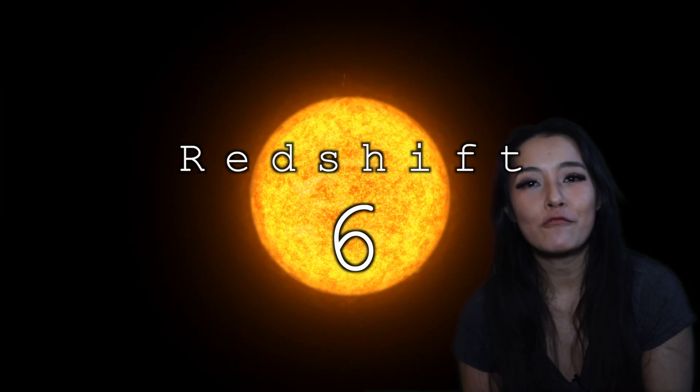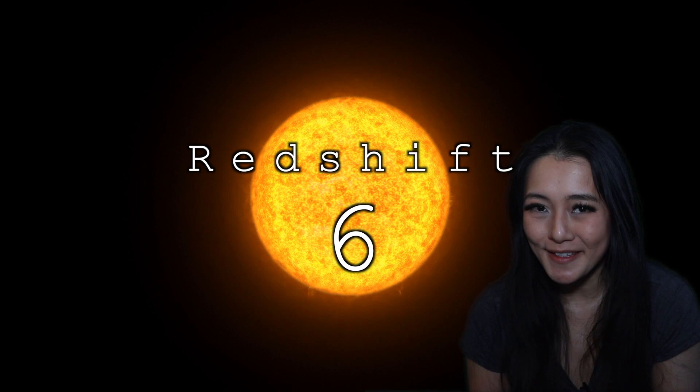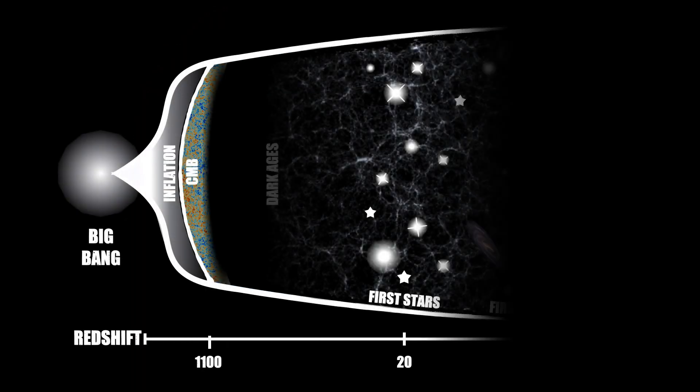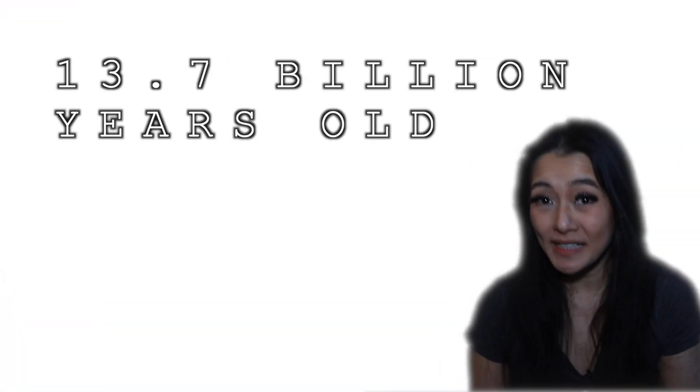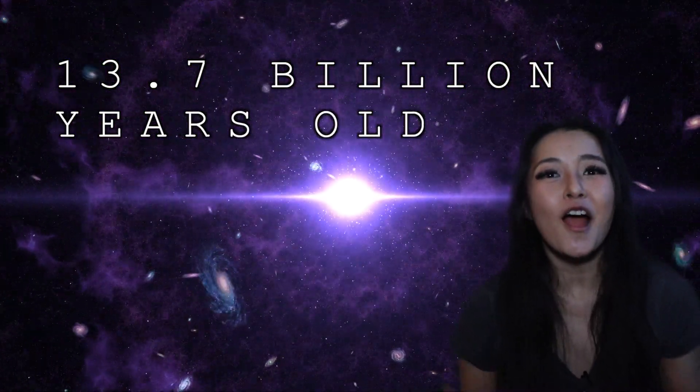Earendel is a redshift 6 star. Recall that redshift is equivalent to distance, where a higher redshift is farther away. It's so far away that the light took 12.9 billion years just to reach us. Now our universe is believed to be just 13.7 billion years old, so this star is really a star from the early universe, born not long after the Big Bang.